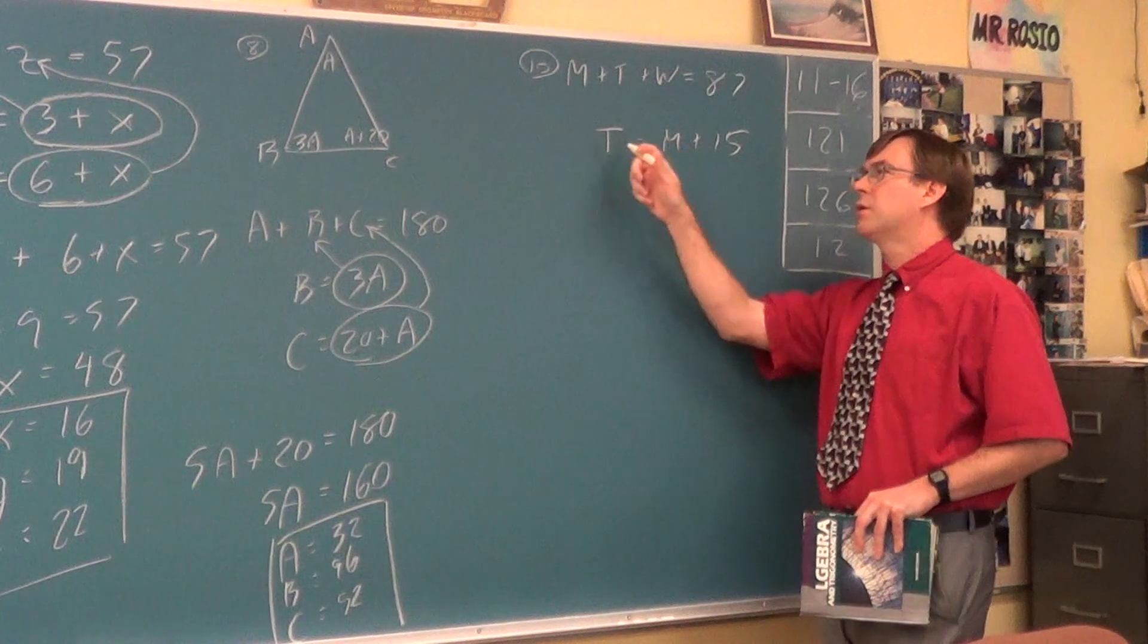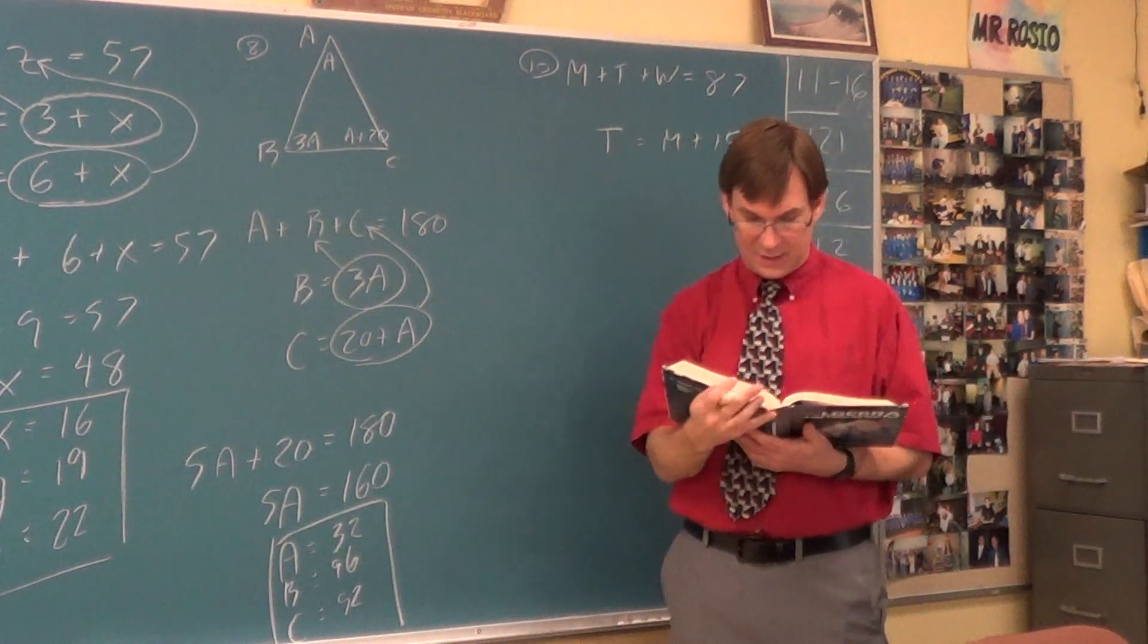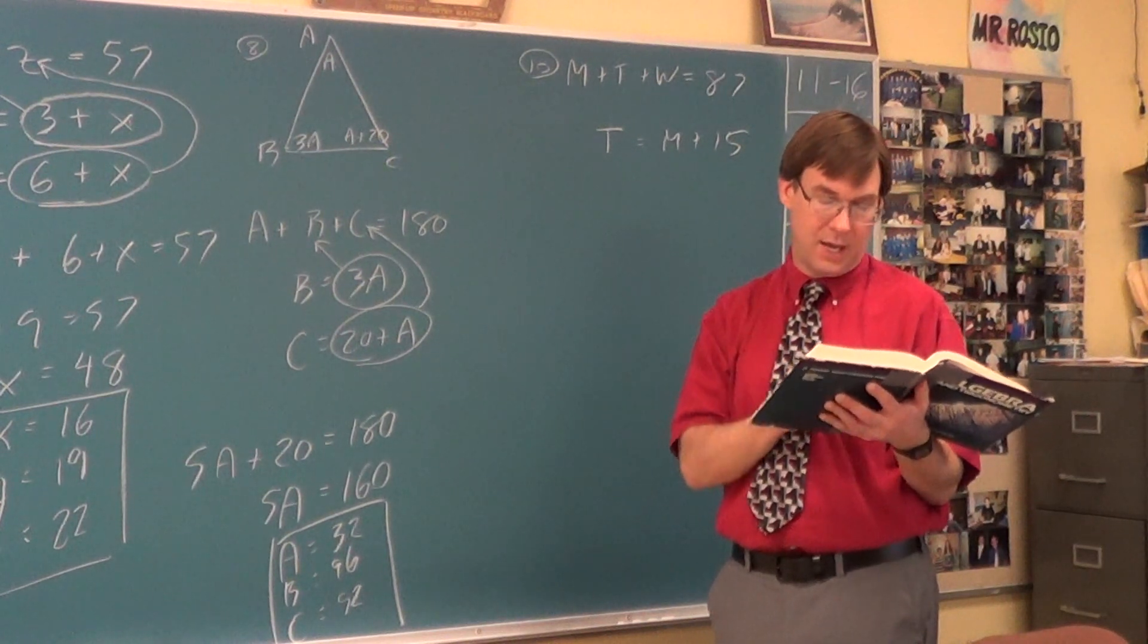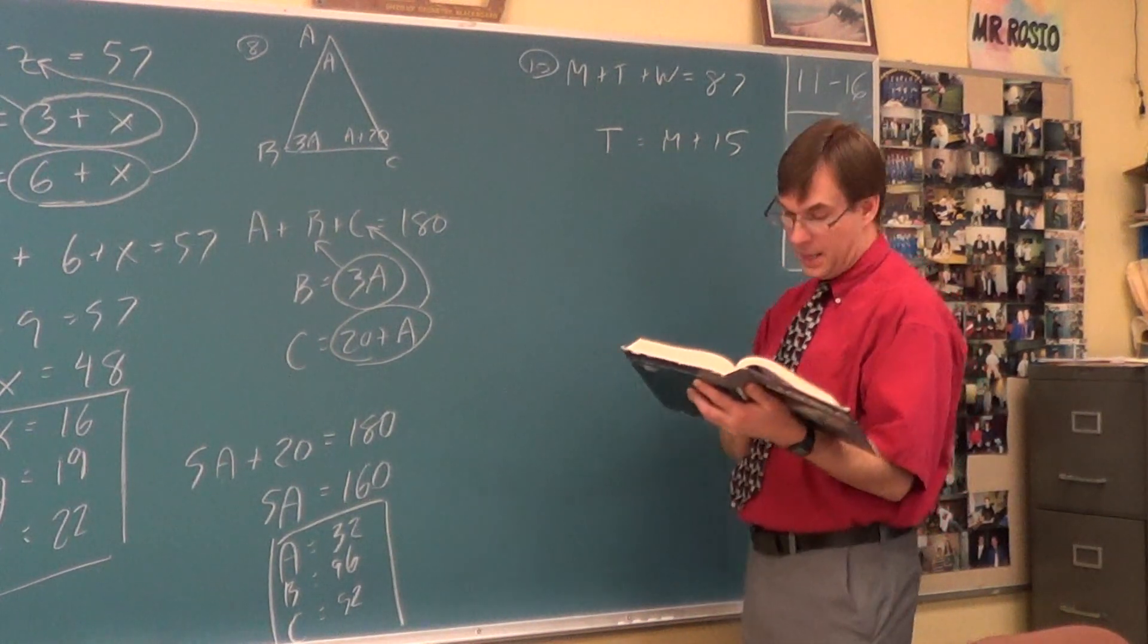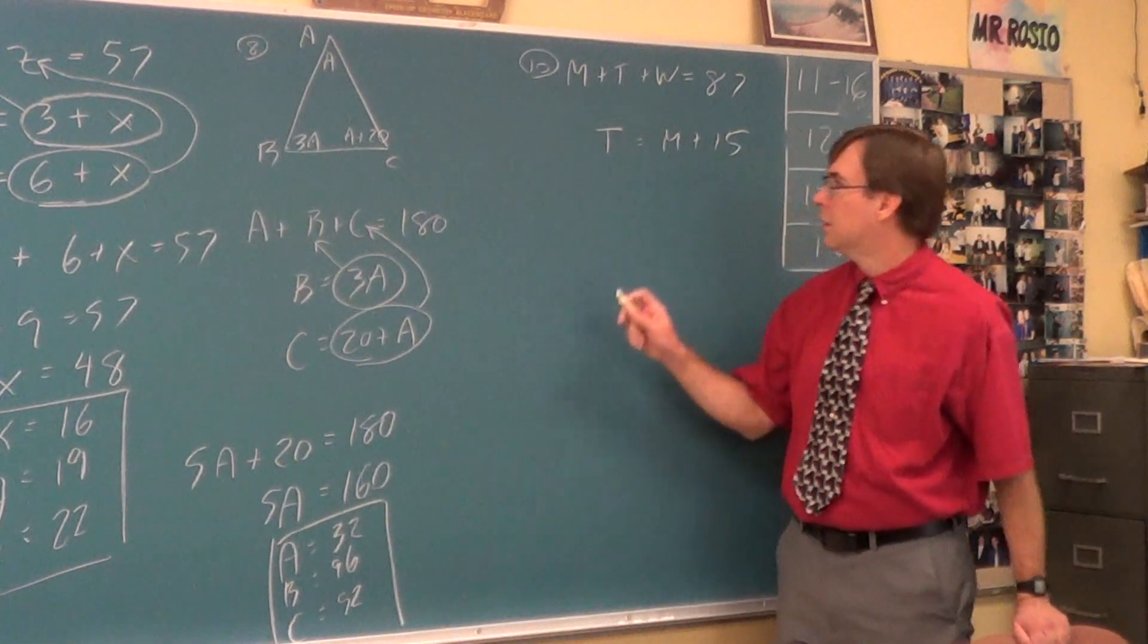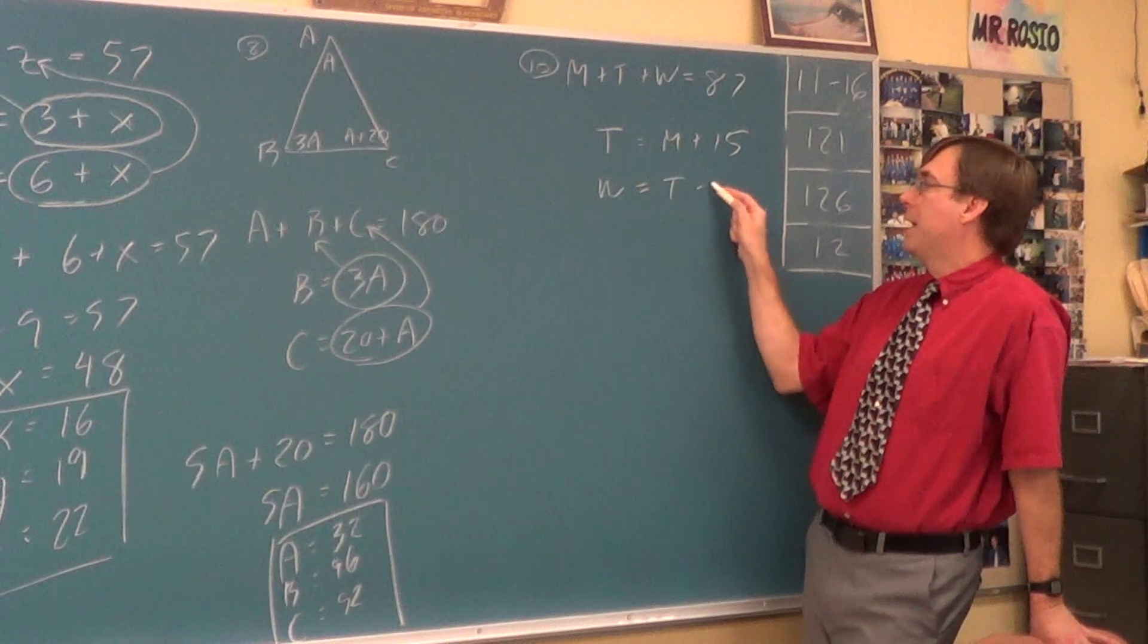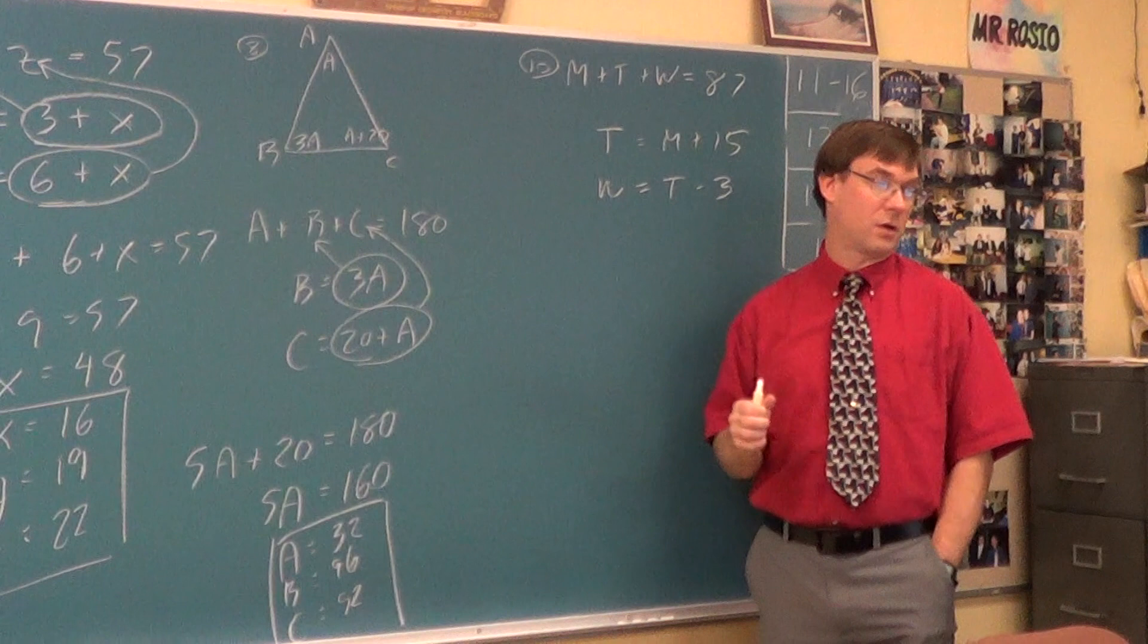It says Tuesday was 15 more than Monday. So T equals M plus 15. Since Monday was smaller, Tuesday is bigger. The Monday needs to add the 15 to make a Tuesday. Then they say Wednesday is 3 fewer than Tuesday. So W equals T minus 3.